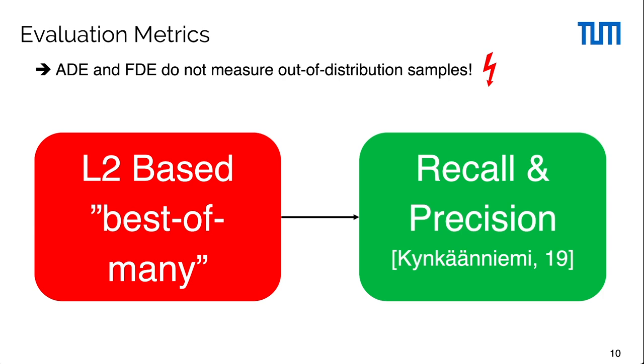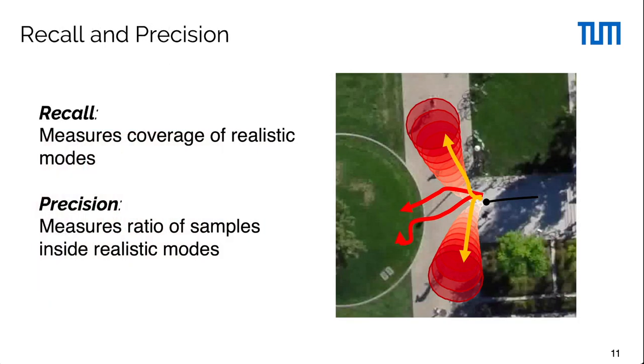We use a recall and precision metric that is commonly used in the GAN literature. While recall measures the coverage of all ground truth modes, precision accounts for the ratio of generated trajectories lying inside of the ground truth support. The precision metric is directly related to the number of out-of-distribution samples.